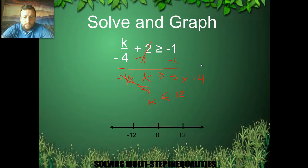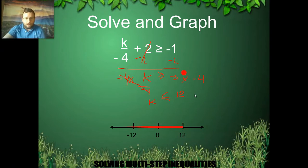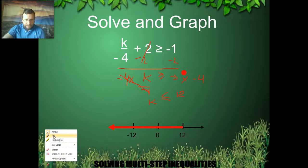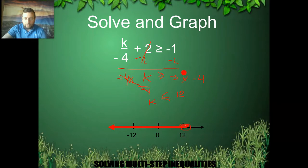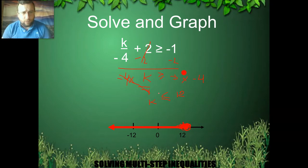Looking at this, I need to include negative 12 because it's shaded — there's a bigger than or equal sign. So I shade and include negative 12, then go to numbers smaller than that, since I'm looking for numbers smaller than negative 12. That's another example of how to do this.